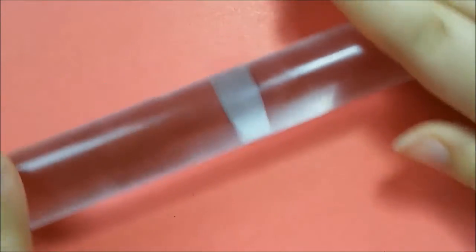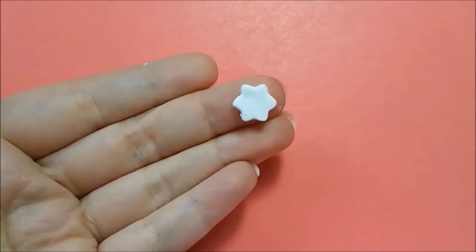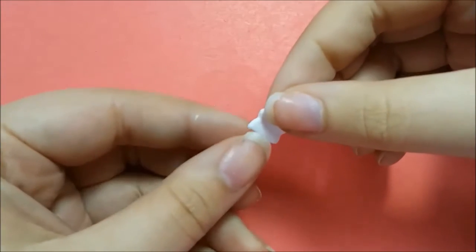Roll out your white clay and take your cookie cutter and cut out the flower's shape, then pinch and pull to distort it slightly.